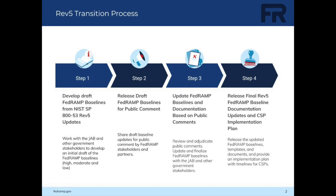Next, in Step 3, FedRAMP will update the baselines and documentation based on public comments. During this phase, FedRAMP will review and adjudicate public comments and update the FedRAMP baselines and associated documents, templates, and guidance accordingly. FedRAMP will also be developing OSCAL versions of the Rev.5 baselines to allow OSCAL-enabled applications to import the baselines. Throughout this phase, FedRAMP will also be working with the JAB and other government partners to ensure alignment on final updates.